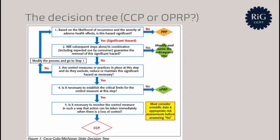A tool used frequently to decide between a CCP and an OPRP is a decision tree. ISO 22000 does not specifically require the use of a decision tree, but it does ask for a documented decision-making process for the selection and categorization of control measures. A decision tree can be one such solution.